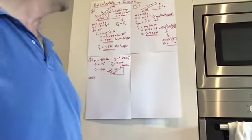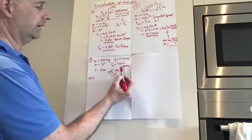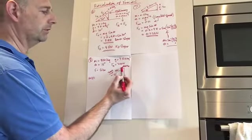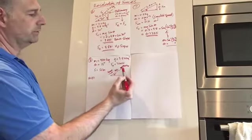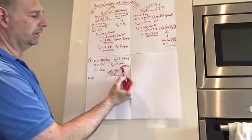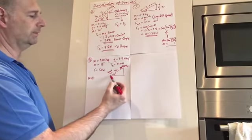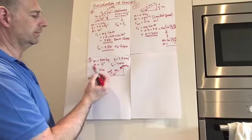Resolution of Forces number 8. This time, apparently, we have a car. Notice the brilliant drawing of the car, with a mass of 900 kilograms, which seems to have brakes fail and then roll down a hill 50 meters. The hill angle is 15 degrees.